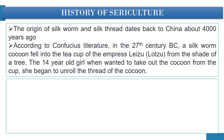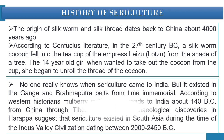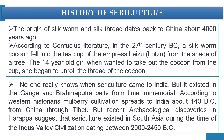The 14-year-old girl, when she wanted to take out the cocoon from the cup, began to unroll the thread of the cocoon. In India, no one really knows when sericulture came, but it exists in the Ganga and Brahmaputra belts from time immemorial. According to Western historians, mulberry cultivation spread to India about 140 BC from China through Tibet. But recent archaeological discoveries in Harappa suggest that sericulture existed in South Asia during the Indus Valley civilization, dating between 2000 to 2450 BC.